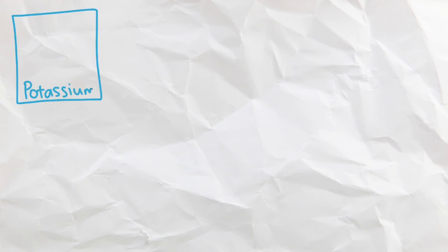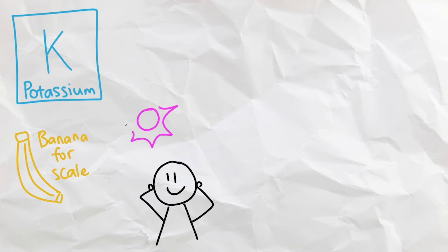Next, we have potassium, which is a soft silver metal, most notably found in bananas. Potassium is essential to life, as it is responsible for neuron signals and found in many fruits and veggies.